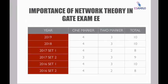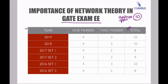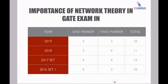For the electrical gate exam, the importance of network theory is even higher — approximately 10 marks come from network theory every year. For instrumentation, the importance is also very high, with approximately 10 to 11 marks being the average every year. So network theory is a very important subject for all three branches.